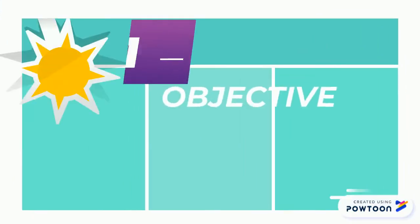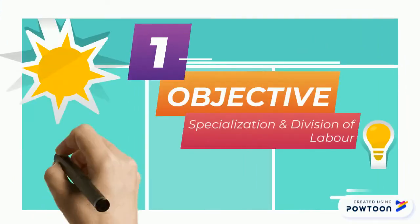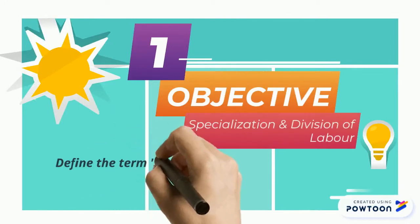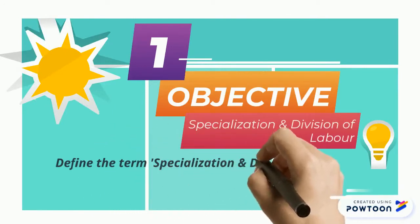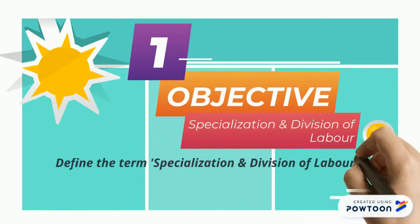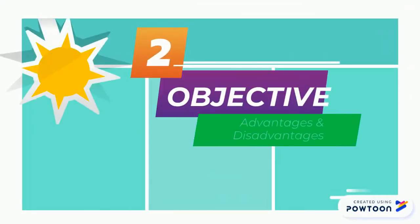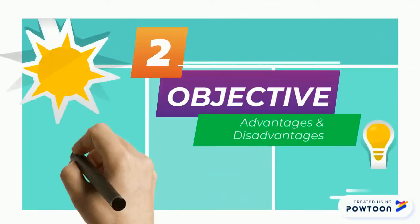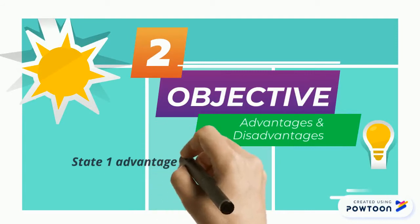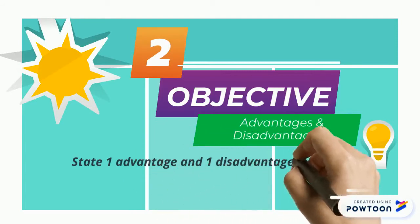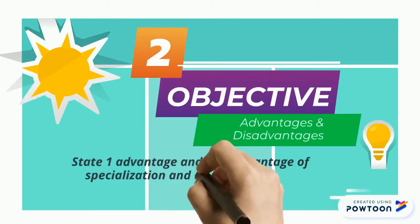Here are the objectives for our lesson today. Objective one is to define the term specialization or division of labor. Our second objective is to look at the disadvantages and advantages, stating one of each.